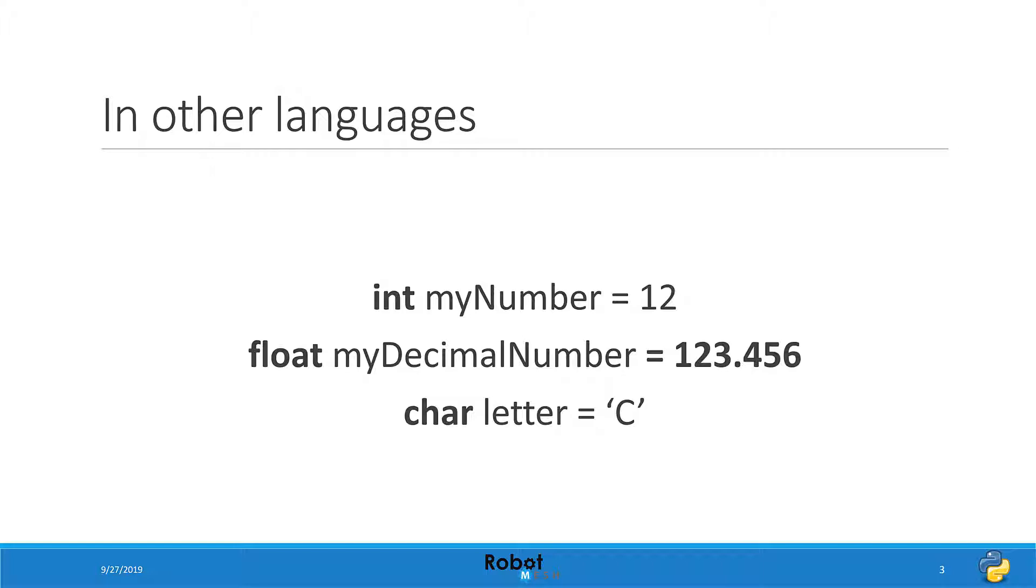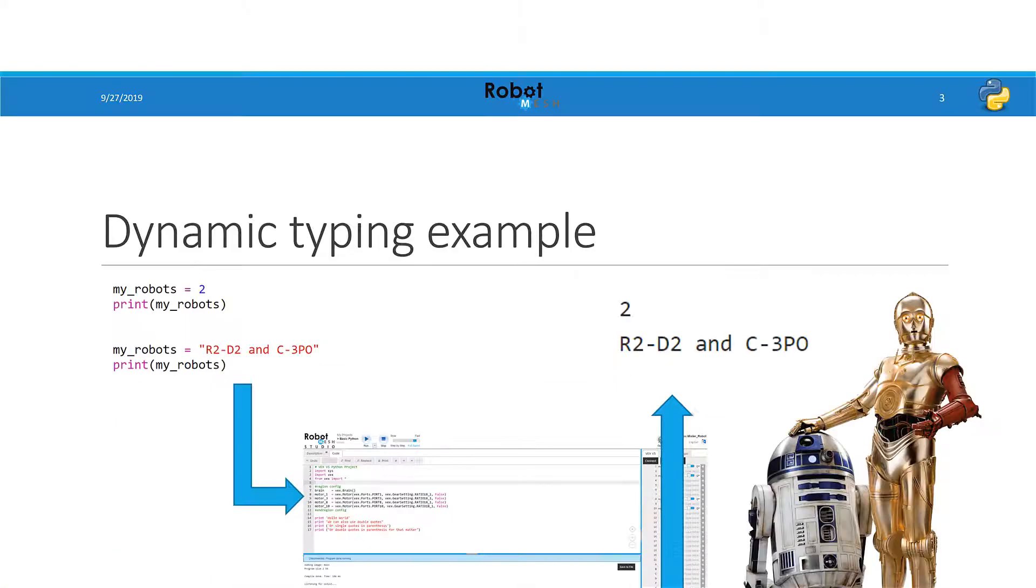Let's take a look now at how this is different in a loosely typed language like Python. In this Python example, we have a variable called my underscore robots, and we have assigned it the value 2. However, a little later on in the program, we might assign my robots to equal a string value such as R2D2 and C3PO. It's this act of changing the variable's data type midway through the program that isn't possible in other programming languages.